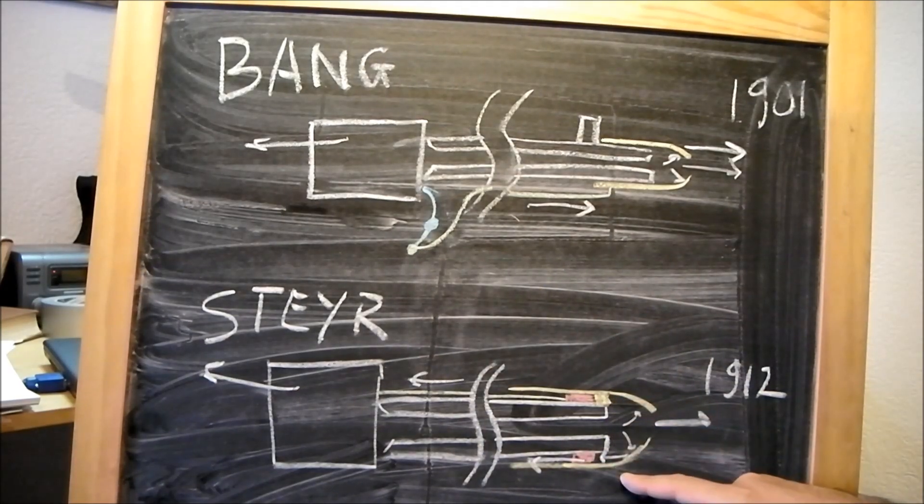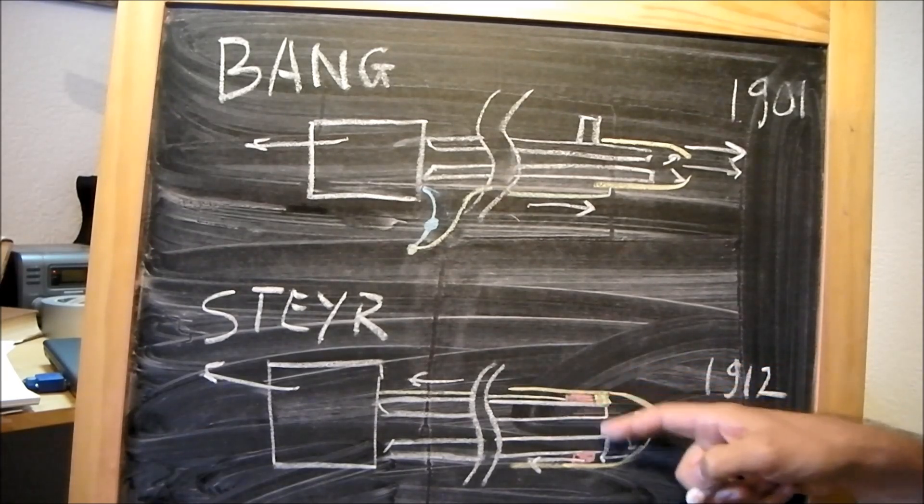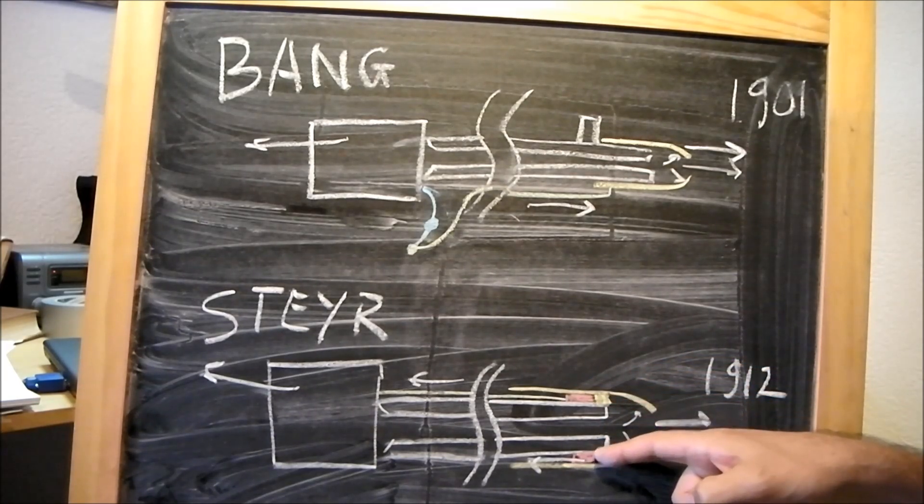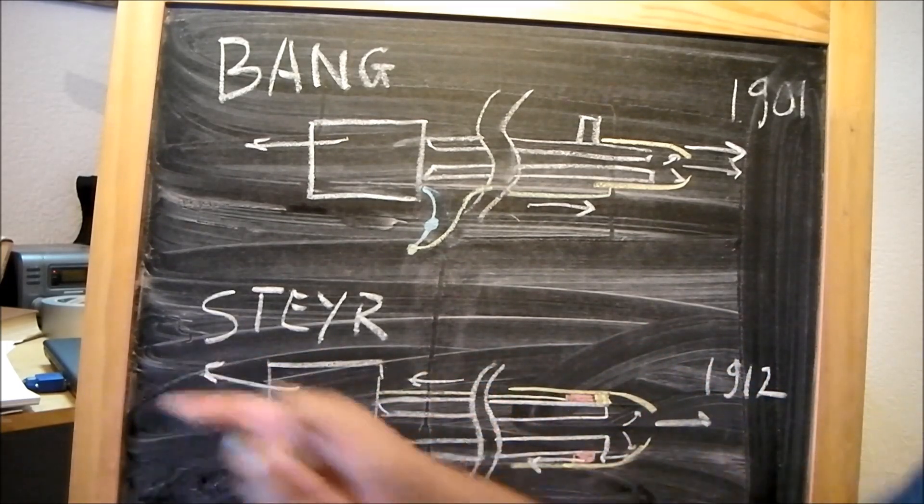And on the Steyr system used on the G41, the sleeve is fixed and forms a cavity in which the annular piston runs around the barrel, pushing it backwards, pushing directly the carrier backwards.